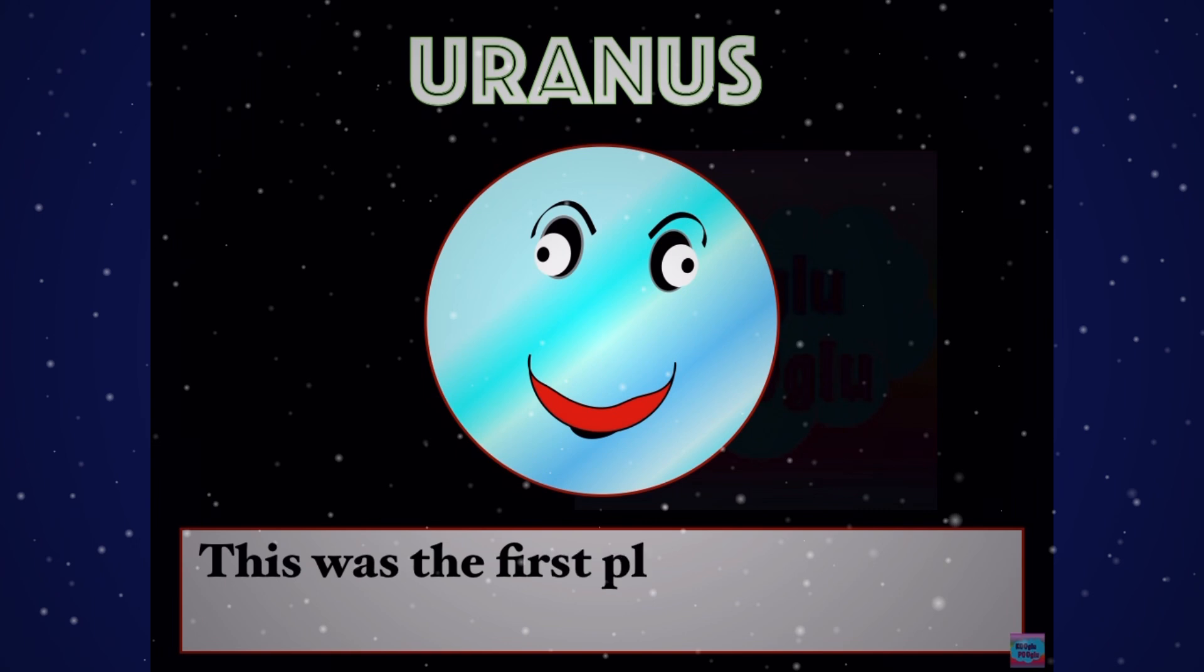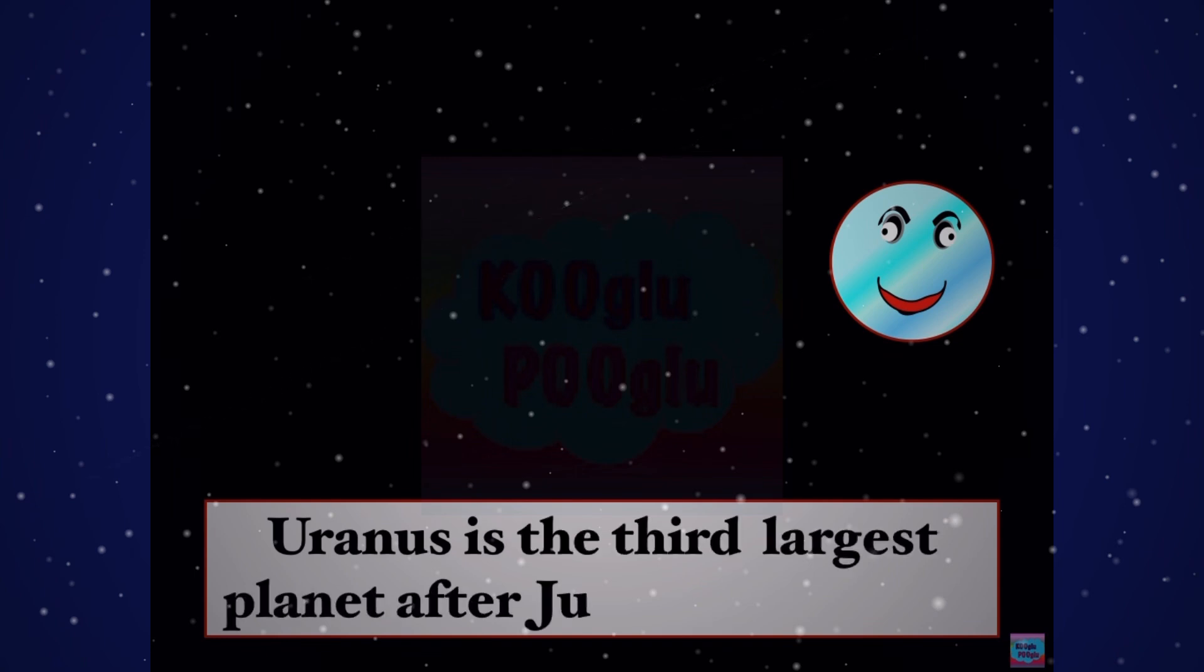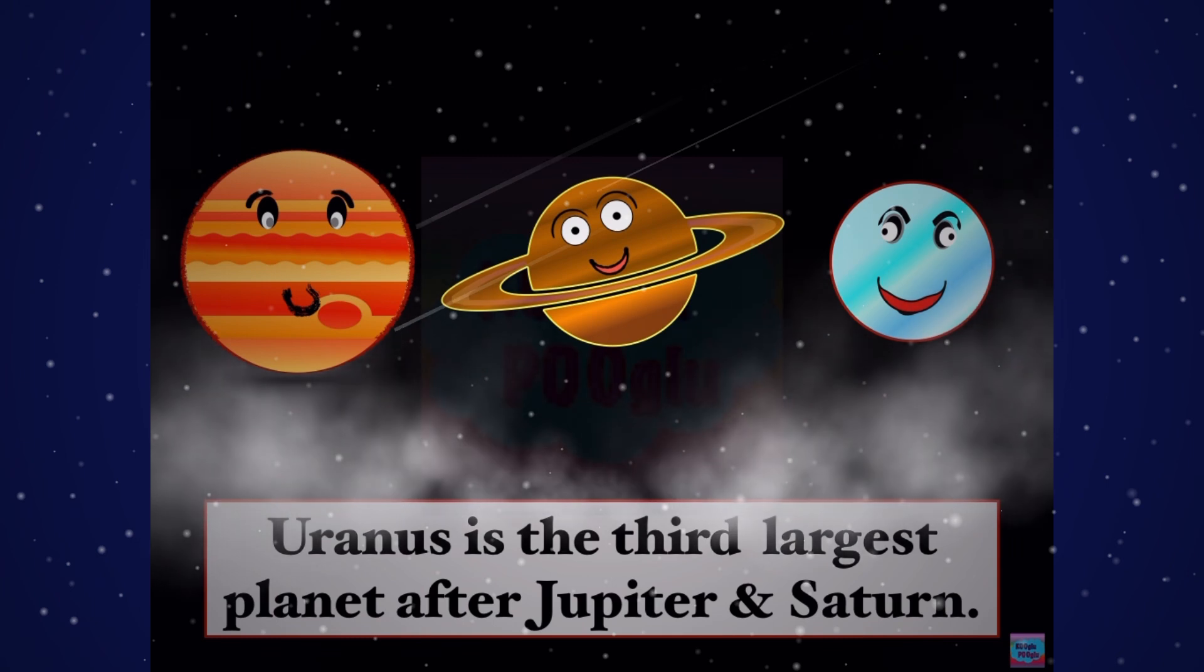Uranus was the first planet discovered by telescope in 1781. Uranus is the third largest planet after Jupiter and Saturn.